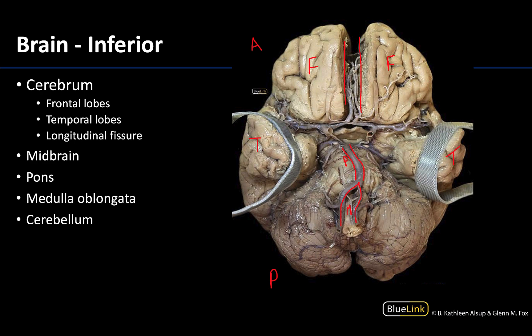And then you can see the medulla oblongata with the vertebral arteries sitting right on top of it as well. Lastly we can see the cerebellum — it is inferior to the cerebrum and posterior to the brain stem — and we can finally see the two cerebellar hemispheres here. So those are going to be the two hemispheres of the cerebellum.